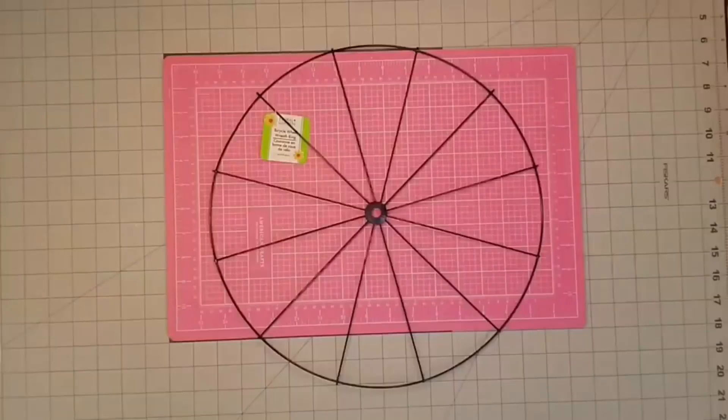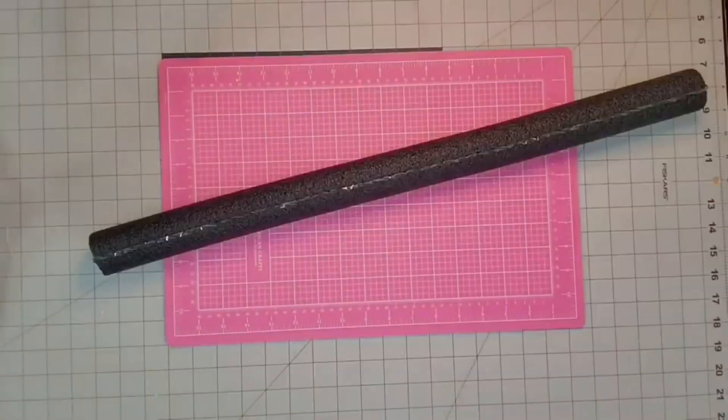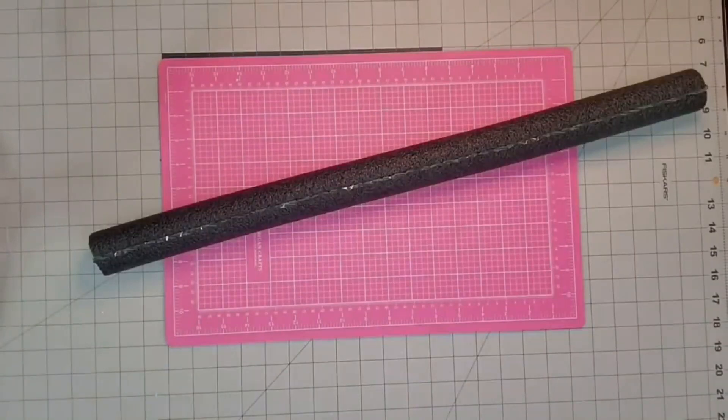True confession y'all, I've never used this bike frame from the Dollar Tree because I didn't think it looked beefy enough to go on my door as a wreath. But I decided with a little pipe insulation I could make it look more like a bicycle wheel and therefore it would make a cute wreath.